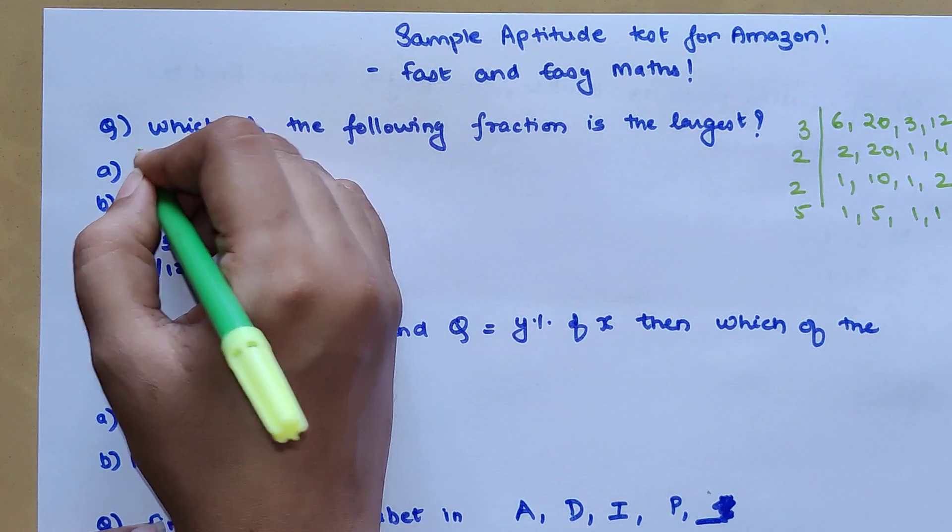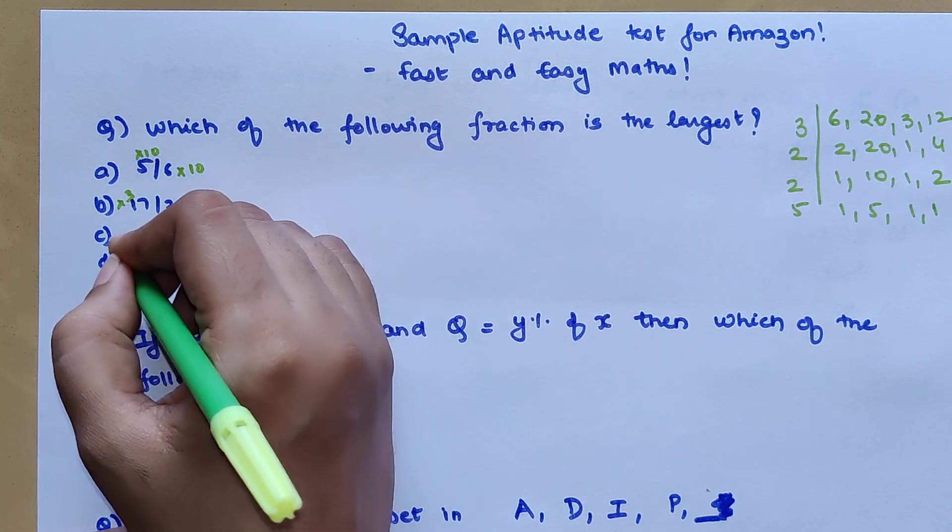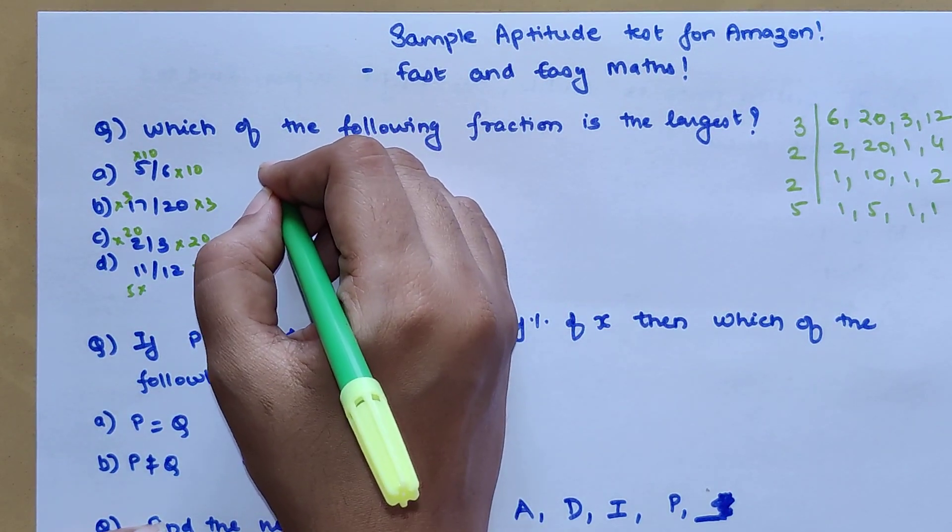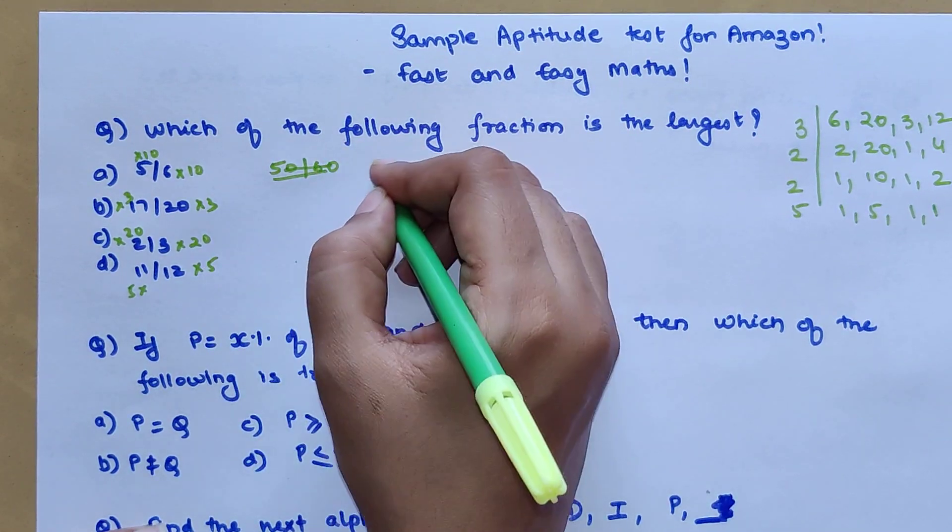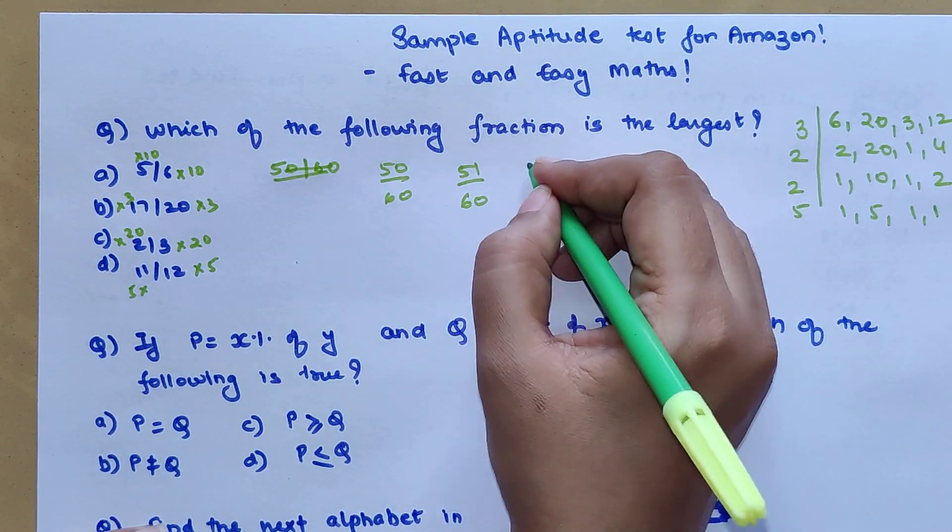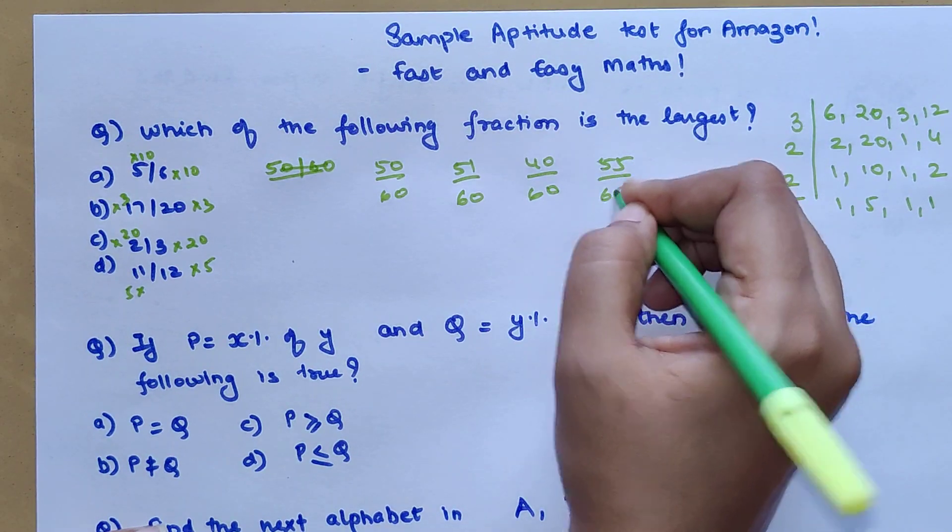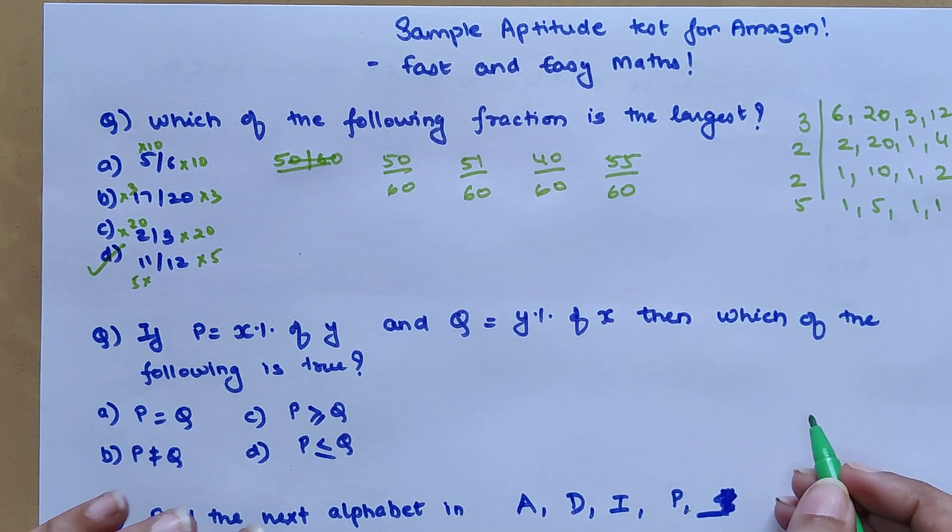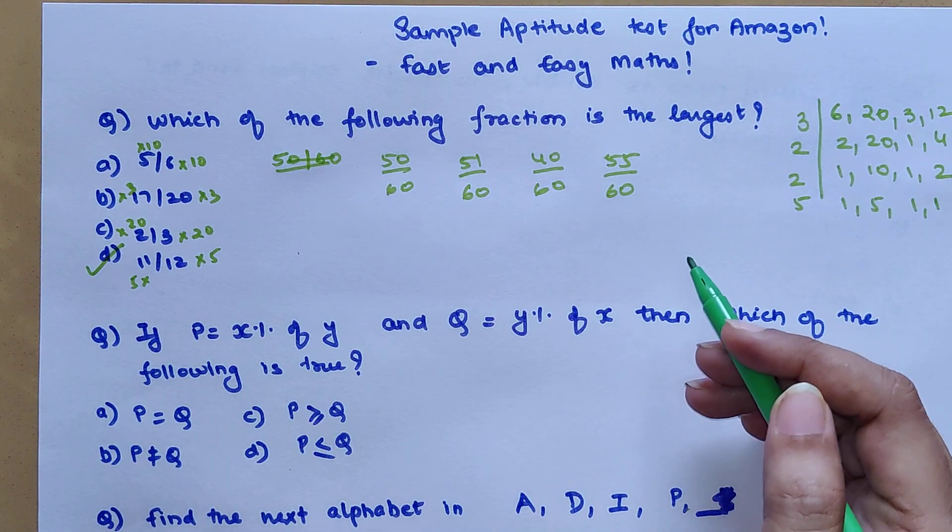You will multiply here by 10, multiply by 3, multiply by 20, multiply by 5. So now the fraction changes to 50 upon 60, then the next one is 51 upon 60, then 40 upon 60, then 55 upon 60. The number which is the highest in your numerator will be your largest fraction because the denominators are same.